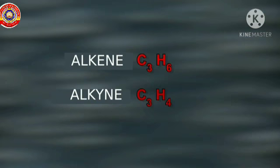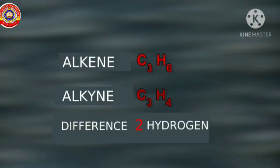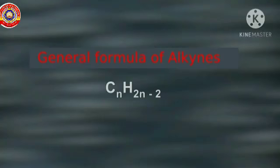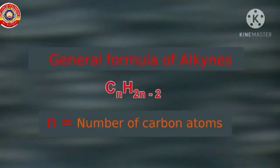Let us write the general formula of alkynes. Comparing the molecular formulas of alkenes and alkynes with equal numbers of carbon atoms, alkynes have two fewer hydrogen atoms than alkenes. Therefore, the general formula of alkynes is CnH2n-2, where n represents the number of carbon atoms.